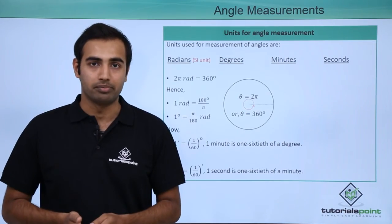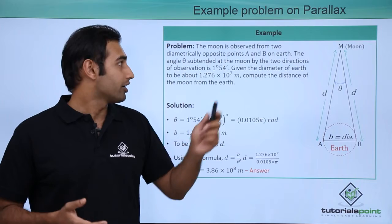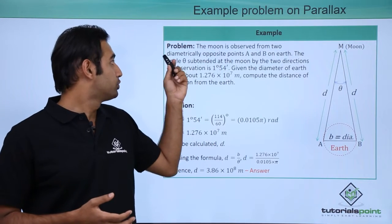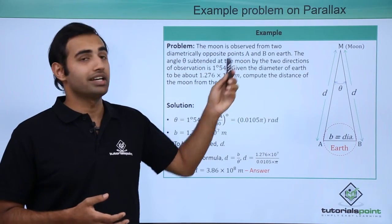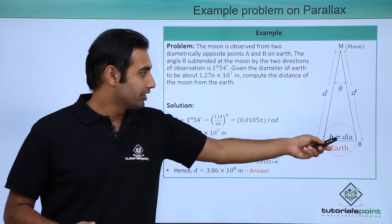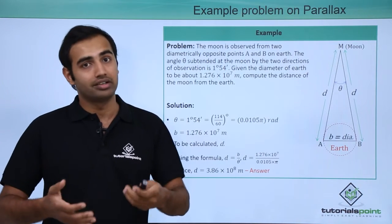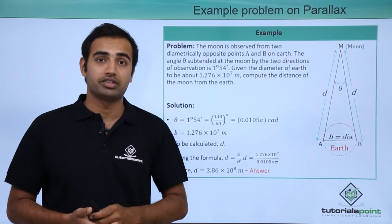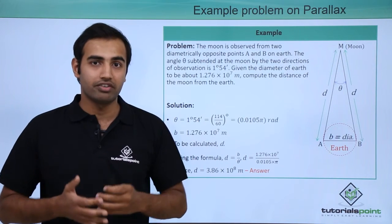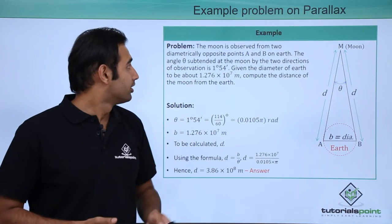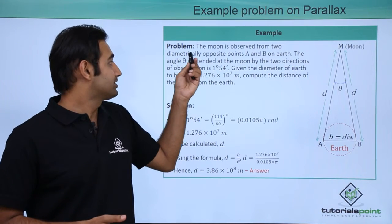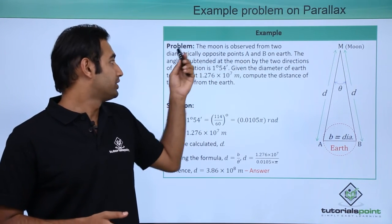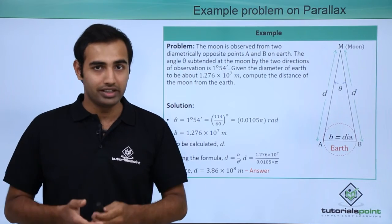Now we will talk about the problem. Over here the moon is observed from two diametrically opposite points A and B on earth. So over here I have my earth and A and B are the two diametrically opposite points on it. The moon over here is represented by M which is at a very large distance from earth. Now the angle theta subtended at the moon by the two directions of observation is 1 degree 54 minutes.